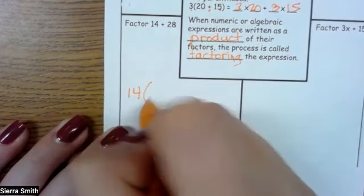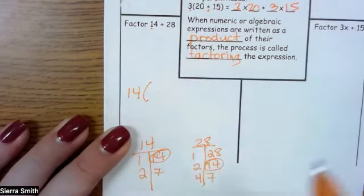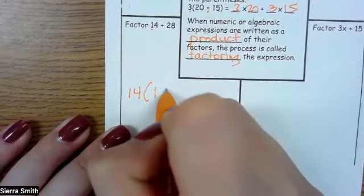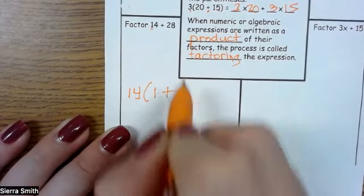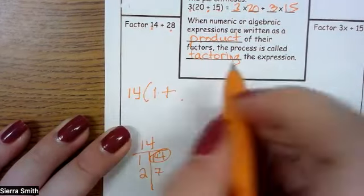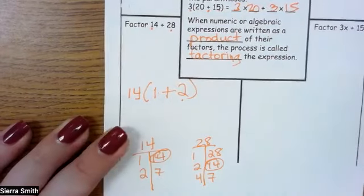So 14 times what would give me 14? 1. Bring down the same sign. 14 times what gives me 28? That would be 2, and you're done with that problem.